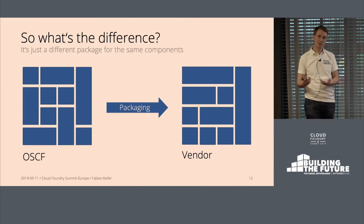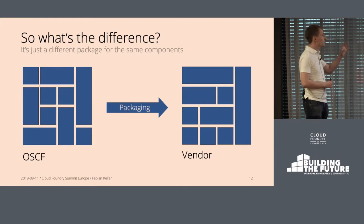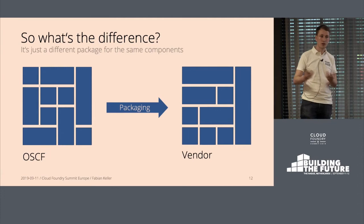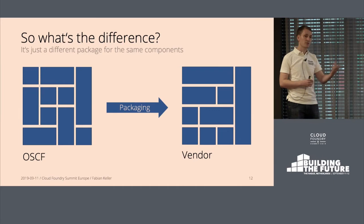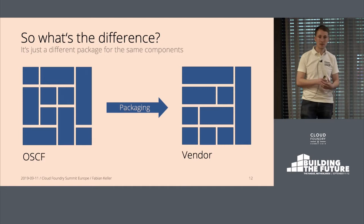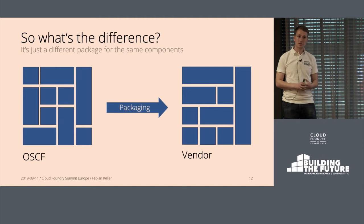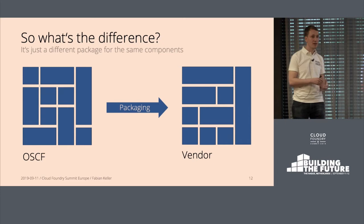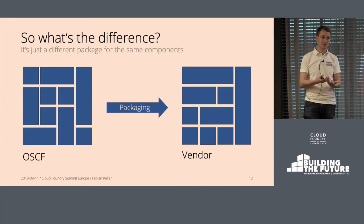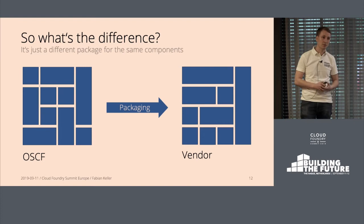If it's the same, what's actually the difference? Open source Cloud Foundry has a set of components you can download from GitHub or bosh.io. The difference from vendor distributions is that they're just packaged differently — some jobs are on different VMs, co-located here and there. Vendors just move around these boxes, but in the end it's the same code. Certified distributions haven't patched or changed the code; they may have only changed the packaging.